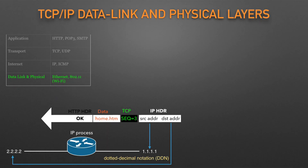When talking and writing about networking, people use the terms segment, packet, and frame to refer to messages. Each term has a specific meaning, referring to the headers and possibly trailers. Each term refers to a different layer: segment for the transport layer, packet for the network layer, and frame for the link layer.